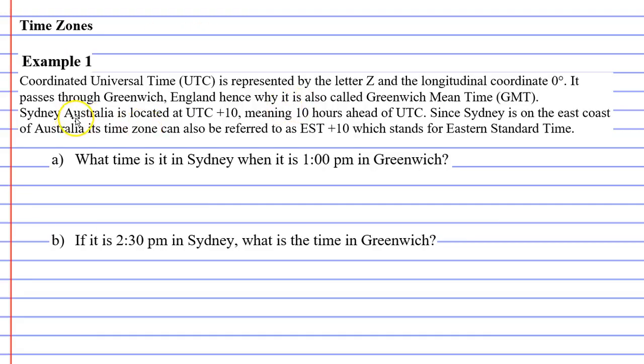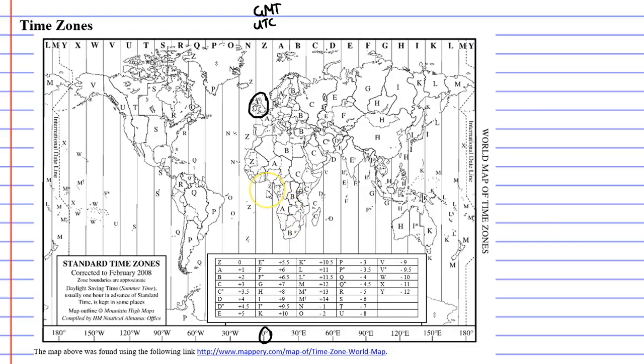Sydney, Australia is located at UTC plus 10. So Sydney, Australia is somewhere around here. And you'll notice it's under the K, which is plus 10. And quite often, rather than just saying plus 10, they'll say UTC plus 10, meaning it's 10 hours ahead of UTC.